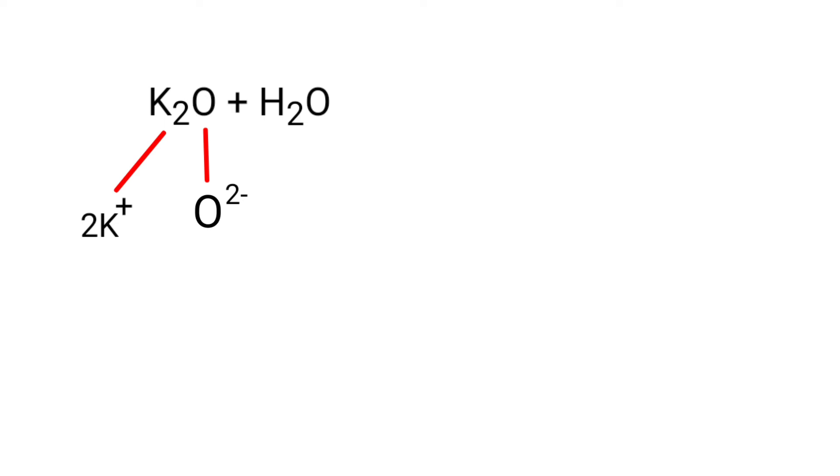In this process, potassium oxide divides into two ions: 2K+ and O2-. And the water molecule divides into two ions: 2H+ and O2-.